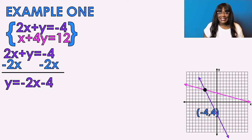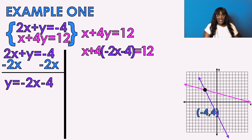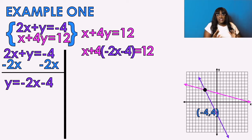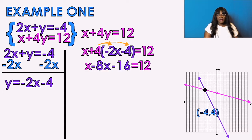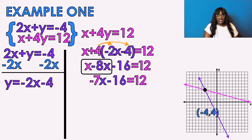Now I'm going to take negative 2X minus 4 and plug that into the pink equation. The pink equation is X plus 4Y equals 12. Instead of Y, I'll place negative 2X minus 4 — because that's what Y equals in the purple equation. I'm going to distribute: 4 times negative 2X gives negative 8X, and 4 times negative 4 gives negative 16. I color-coded it. Now combine like terms: X minus 8X gives me negative 7X.